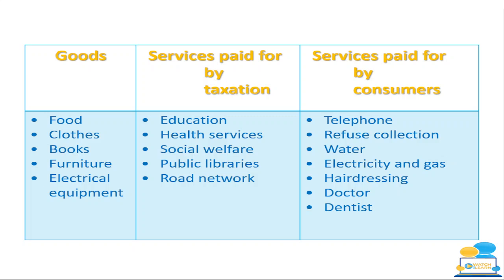Here are examples of goods and services — this list is not exhaustive, there are many more, and you won't lose marks for putting something other than what's on this list. Goods include food, clothes, books, furniture, and electrical equipment. Services paid for by taxation: anyone that works in Ireland legally has to pay taxes. If you look at the decision making chapter you'll learn more about that, and you can find it on our YouTube channel or the exam revision website.